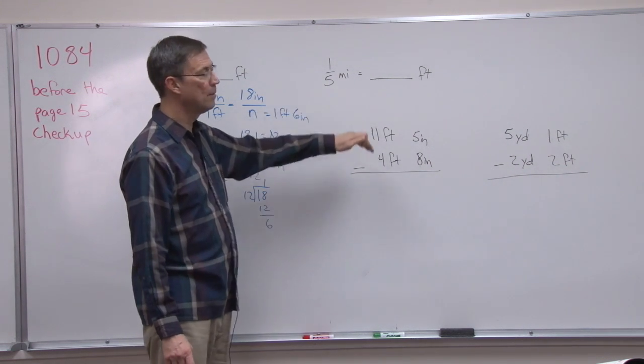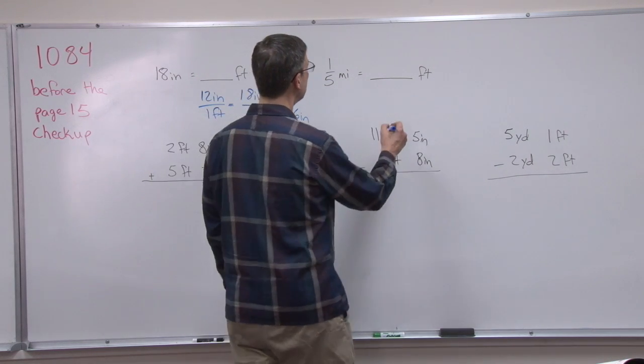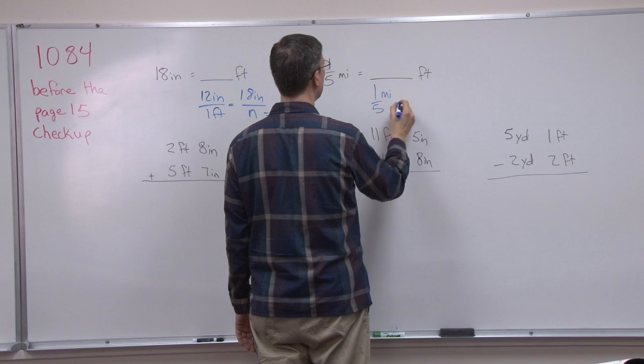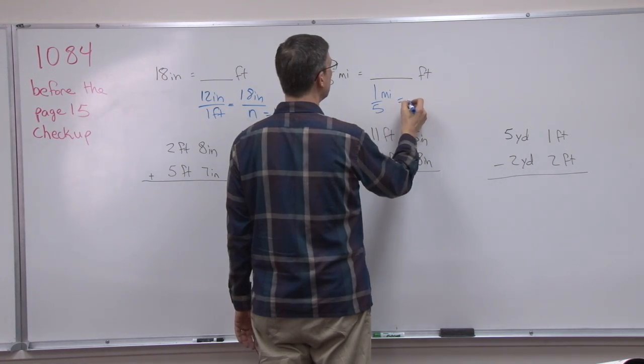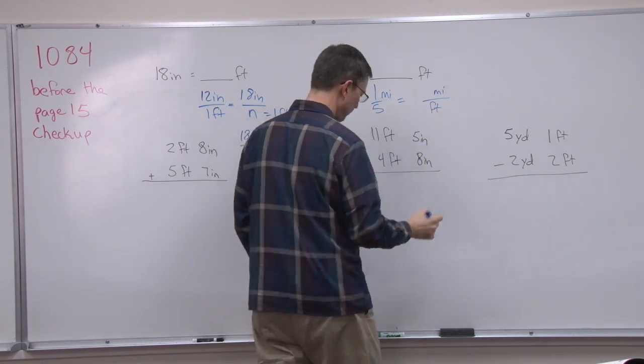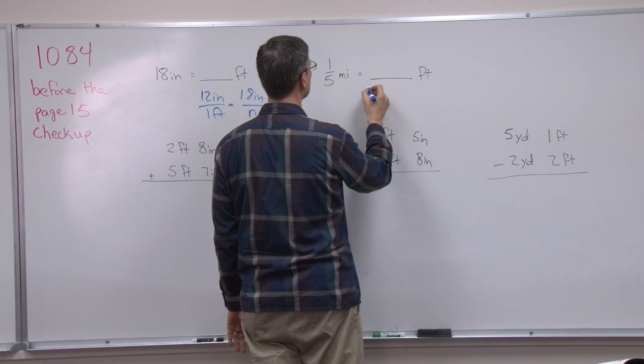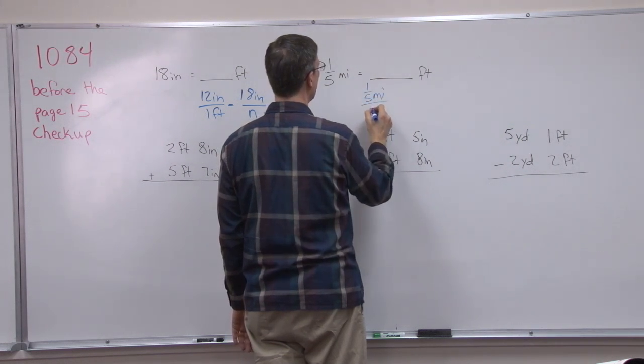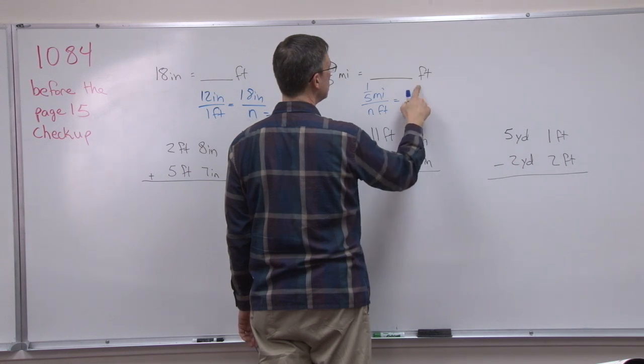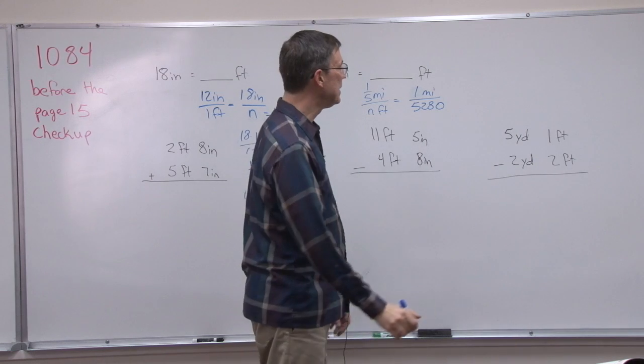Let's do the same type of a thing, this time with miles and going into feet. Now one of the facts that they expect that we have memorized is that 1 mile, 1 fifth of a mile, and then we're going from miles to feet. 1 fifth of a mile over an unknown number of feet equals, and then over here we're going to put 1 mile over 5,280 feet.